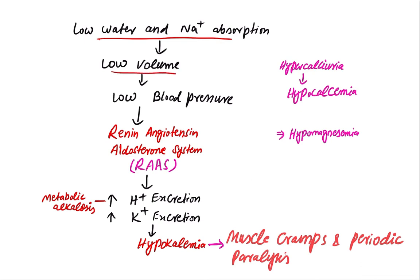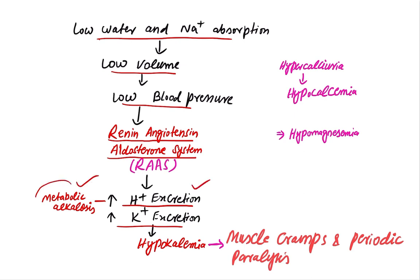Low body volume leads to lower blood pressure, which leads to activation of the renin-angiotensin-aldosterone system. This system leads to increased hydrogen ion excretion and increased potassium excretion. Increased hydrogen ion excretion leads to metabolic alkalosis, and increased potassium excretion leads to hypokalemia.